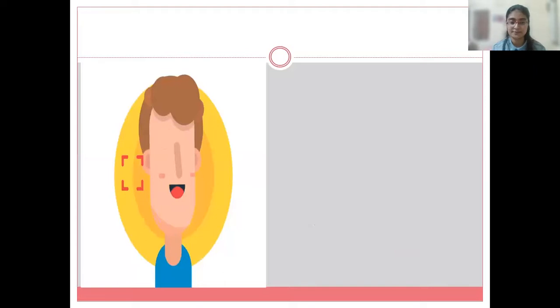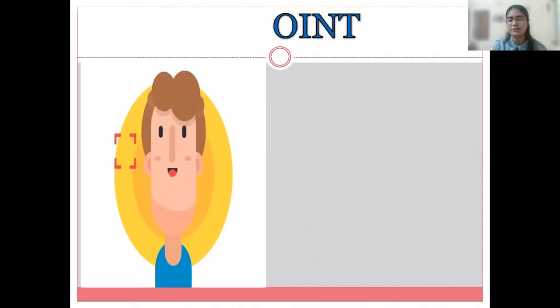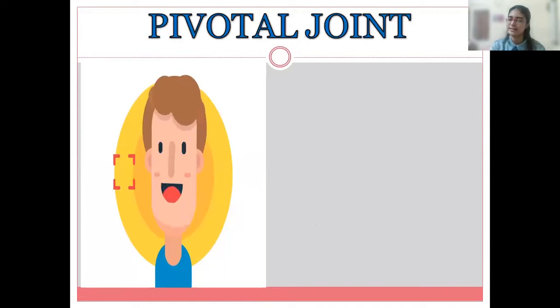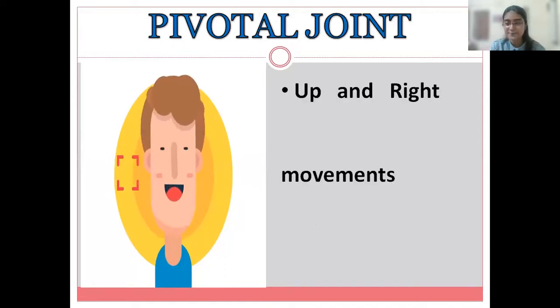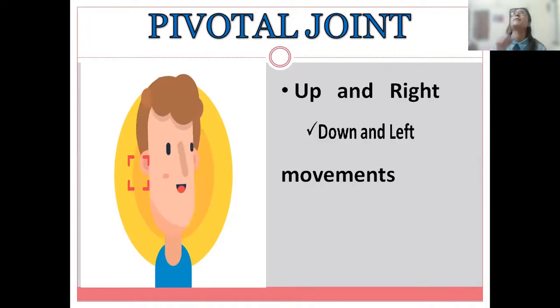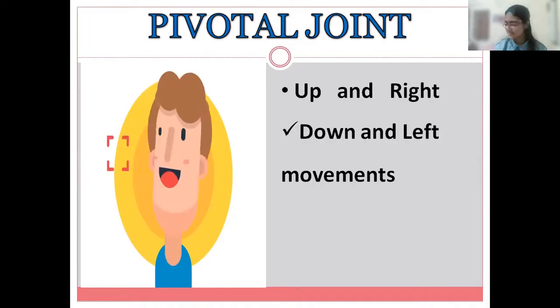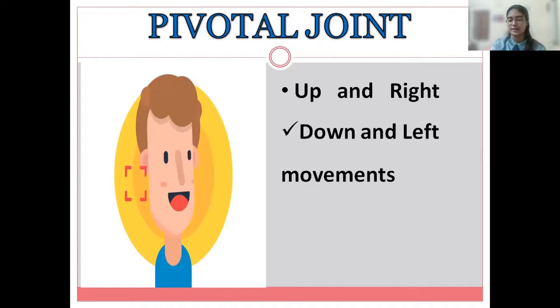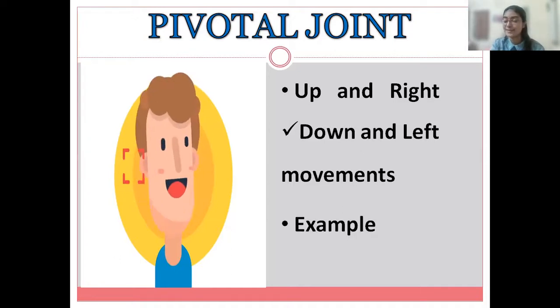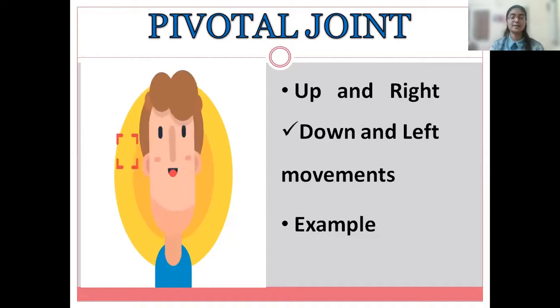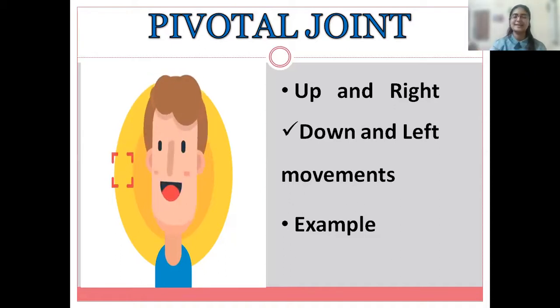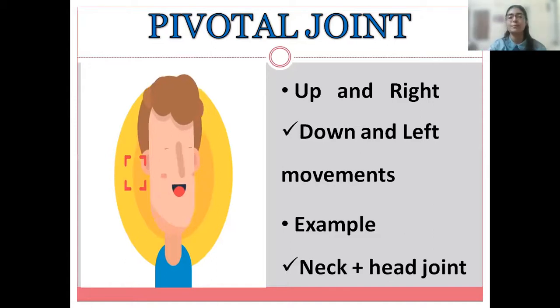Now, see carefully what this sir is doing. He is trying to look sideways and up and then again down. So, what kind of joint is he showing? Very good. He is showing the pivotal joint. So, where are the movements happening? Yes. Correct. It is upwards, downwards, to the right, to the left. Four directions. So, what is the example? What are we trying to move? Yes. The neck and the head. Means the pivotal joint.